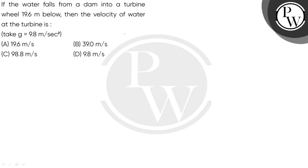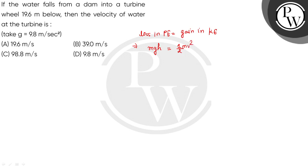We will use energy conservation here. When the water falls, the loss in potential energy would be equal to the gain in kinetic energy. The loss in potential energy would be mgh, and the gain in kinetic energy would be equal to half mv squared.